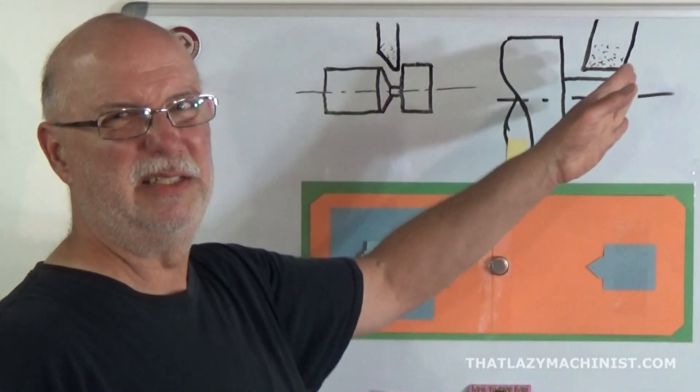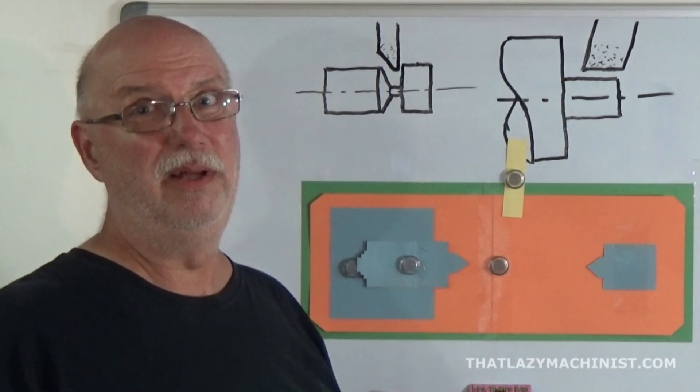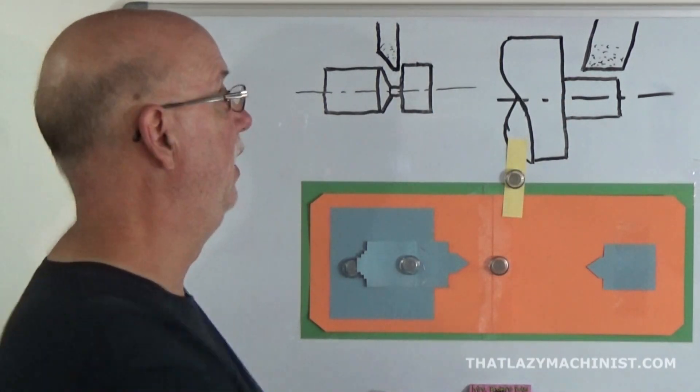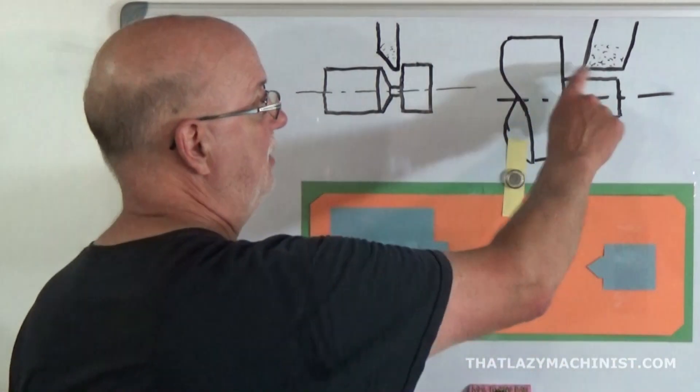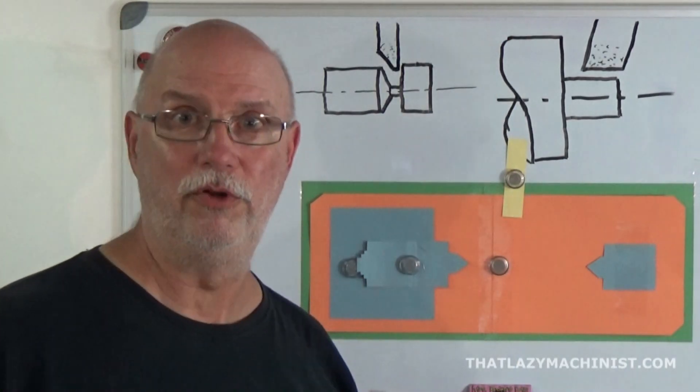And what that permits me to do is to grind up to a shoulder without touching that side surface. If your wheel is straight, it's hard to get right up there without touching at least a little bit. And you want to avoid that if you don't need to grind the end. This is a good way to get right into the corner without touching the vertical surface.